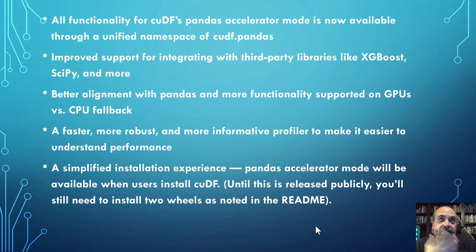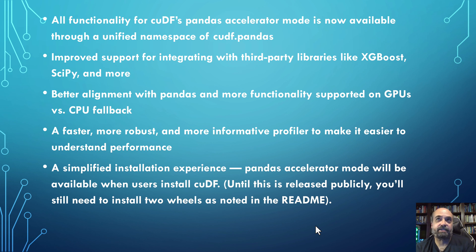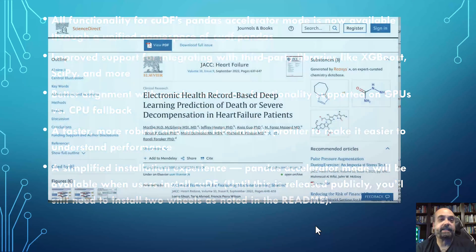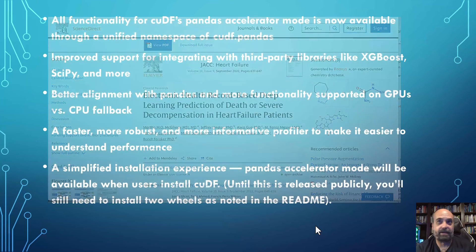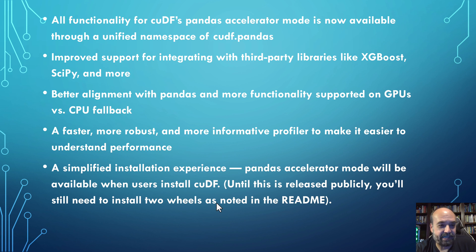There's better alignment with pandas and more functionality running on GPUs versus CPU fallbacks. In the briefing calls they mentioned how they're literally running this against the unit tests for pandas to get more and more compatibility of things that will actually run on the GPU. I tried this on a dataset from a research paper with a local hospital and was able to get around 70% of our pandas code running completely through this for about a 20x speed improvement. I've seen reports of up to 150x speed improvement — just a drop-in replacement for pandas code we never even thought of running on cuDF.